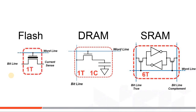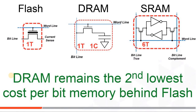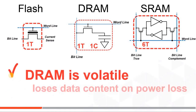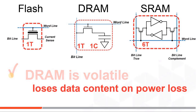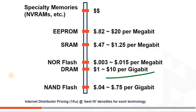Through continued improvements over 50 years, DRAM has remained the second most compact memory technology in production, second only to flash memory. Unlike flash but like SRAM, it is volatile, which means it loses its data content on a power loss to the IC. Also unlike flash but like SRAM, it is very fast and has symmetrical read and write speeds.